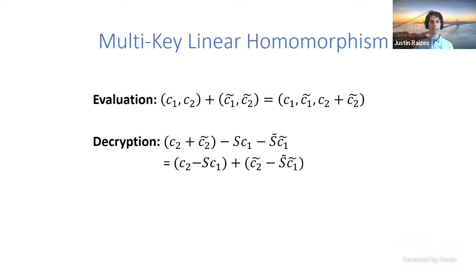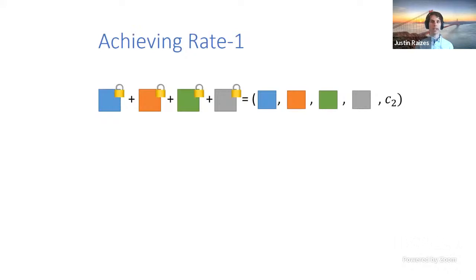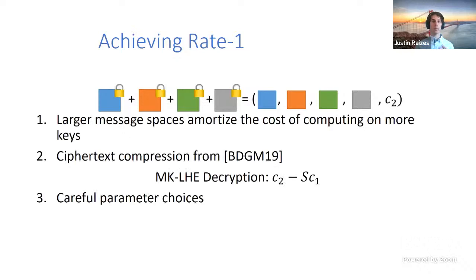To enable multi-key linear evaluations on ciphertexts encrypted under different secret keys, we keep the first component of each ciphertext and combine the second components. Decryption proceeds similarly by pairing the first components with their respective secret keys. Evaluated ciphertexts scale with the number of keys, but if the number of keys is fixed, you can combine arbitrarily many ciphertexts without increasing message size.